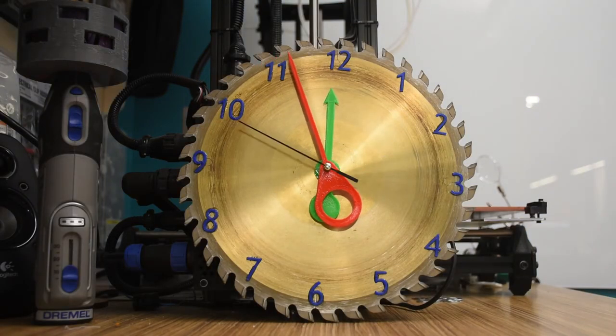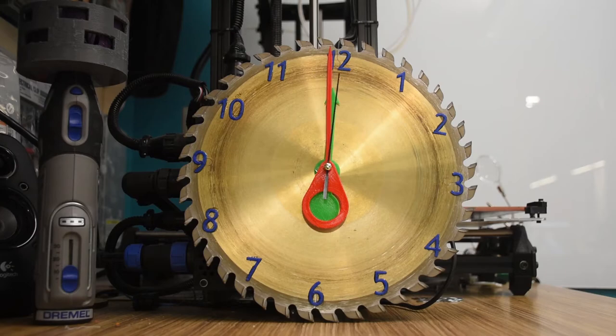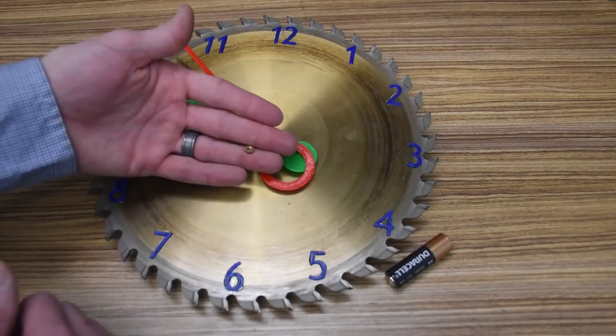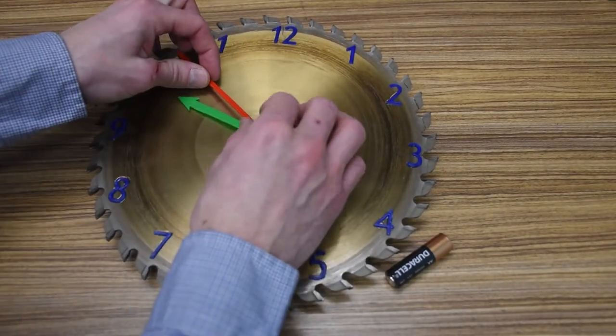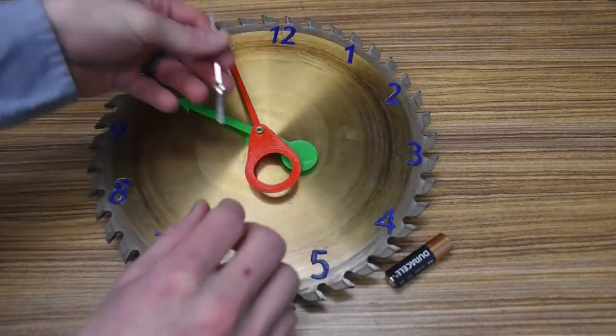The one design flourish here is the hole in the minute hand that allows the hour hand's counterweight to show through when the hands are aligned. The hands just press onto the shaft, and the minute hand is secured by this little nut. The second hand then presses into the tiny shaft in the center, and that's it.